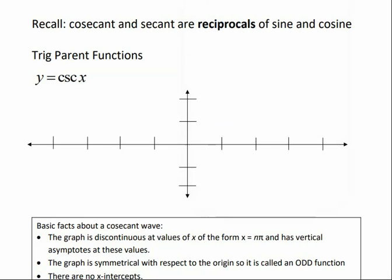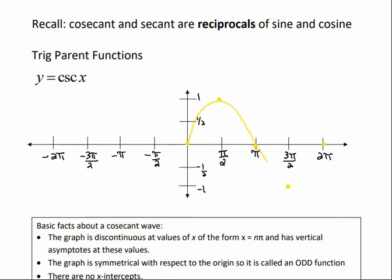Let me first label the parts of our graph. Now let's remember what the sine function looks like. Sine starts at 0 at 0 radians, and then at pi over 2 it goes up to 1. At pi, it goes back down to 0. At 3 pi over 2, it's at negative 1. And at 2 pi, it's back to 0. And it's a smooth curve.